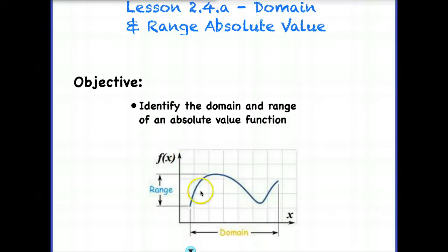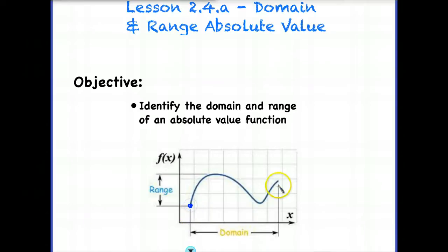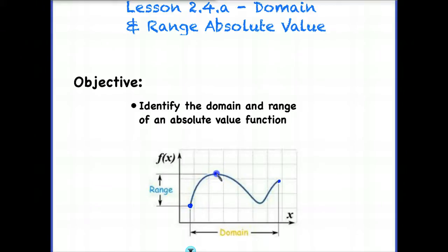This is not an absolute value function, but I just wanted to refresh your memory about domain. Domain is all the possible x values that a function may have, and range is all the possible y values. In this particular function, if we had a point at one end and an ending point at the other, our domain would range from that point all the way to the other. Our range would have an interval from that point all the way up to the highest maximum point. We can express domain and range using either interval notation or algebraic notation using inequalities.